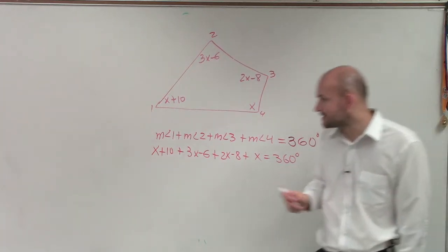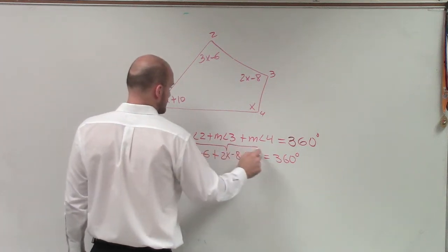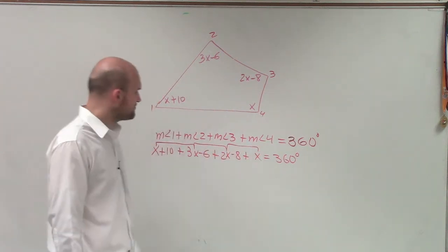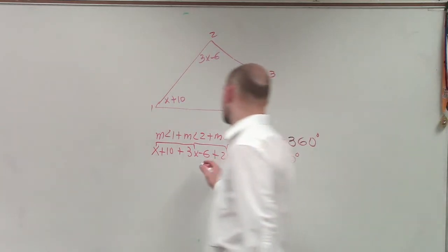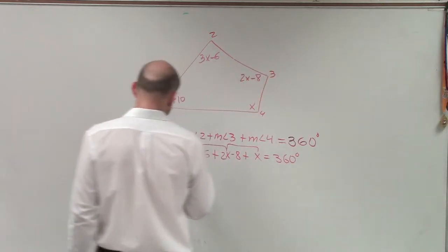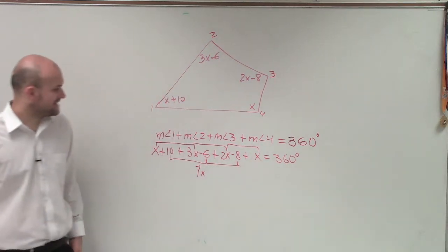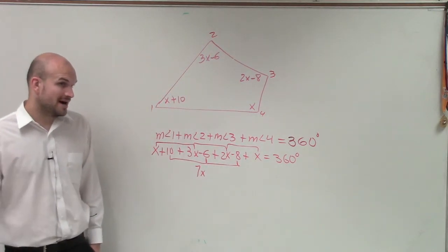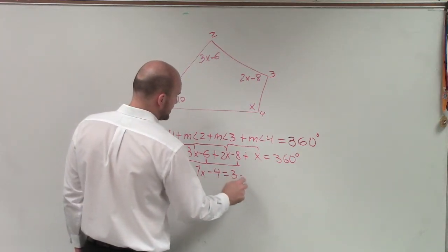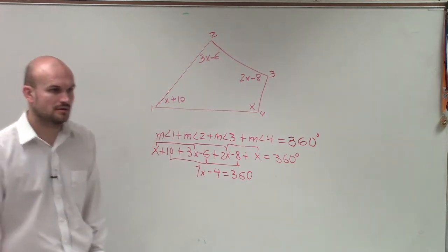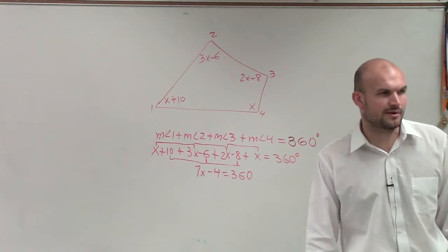Now, Lauren, the next thing I need to do is combine like terms. So I combine my variables. So x plus 3x is 4x, plus another 2x is 6x, plus another x is 7x. Then I combine my numbers. So I have 10 minus 6 is 4, minus the number 8 is going to be negative 4, equals 360. Does everybody see how I got to this equation, or anybody have any questions on how I got to this equation?